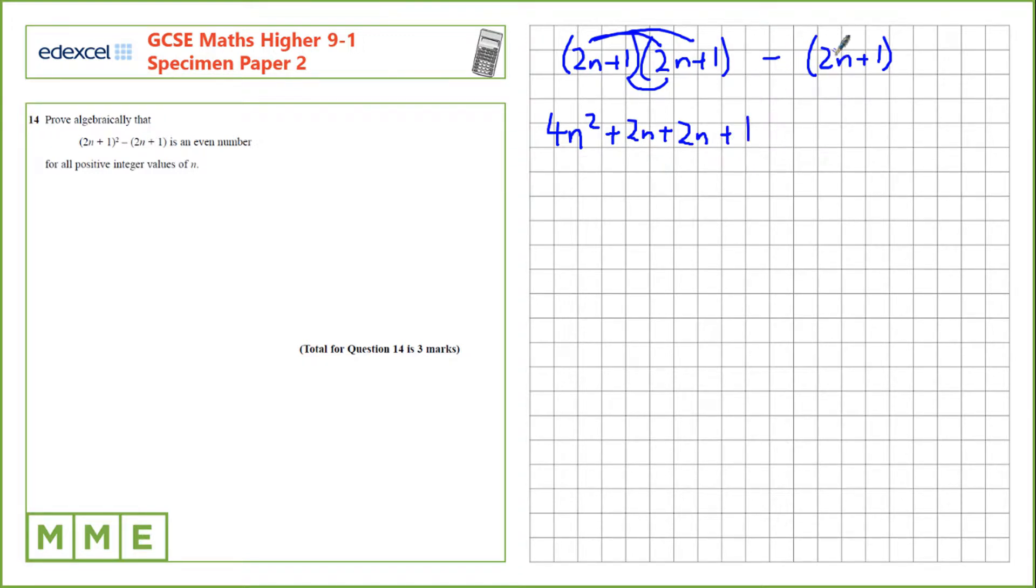We've got a subtract sign in front of a bracket, that's the same as writing minus 1 times the bracket. So minus 1 times 2n is minus 2n, and minus 1 times 1 is minus 1.